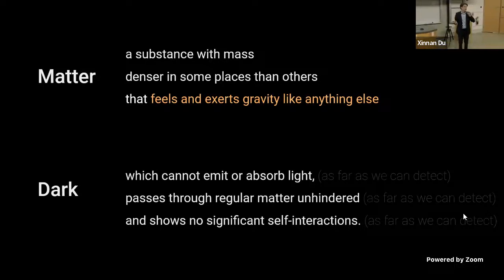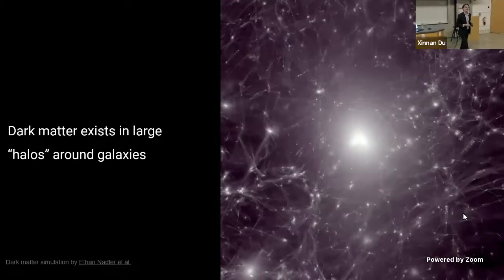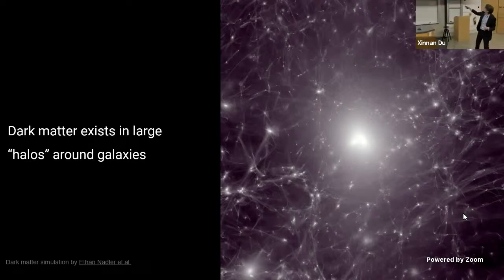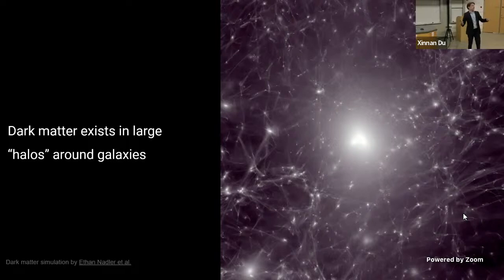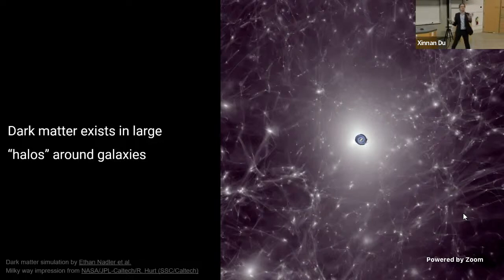What 'dark' means is that it cannot emit or absorb light — we should have really called it transparent matter, but dark matter sounds a lot cooler. It is also a kind of ghostly matter that passes through regular matter unhindered. If a bit of dark matter would encounter a bit of normal matter, it would just pass right through like a ghost. And finally, it doesn't show significant interactions with itself beyond gravity. I should add a caveat: that is only true as far as we can detect — maybe dark matter emits a little bit of light, which would be amazing.